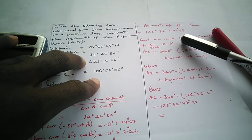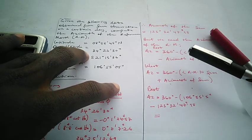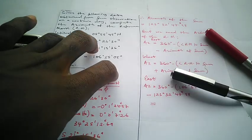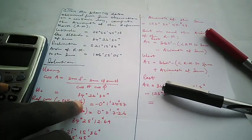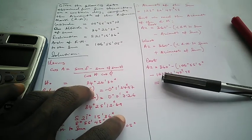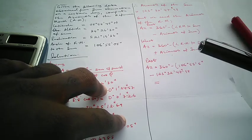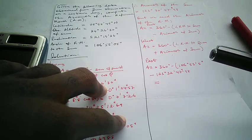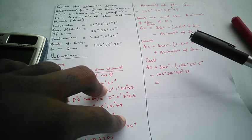To find the azimuth of the reference mark, we use the east formula: azimuth of reference mark = 360° − (angle of reference mark to the sun) − (azimuth of the sun). The azimuth of the sun is 123° 32' 47.98". We leave the final calculation open for viewers to complete and post their answer in the comment section for an interactive session.